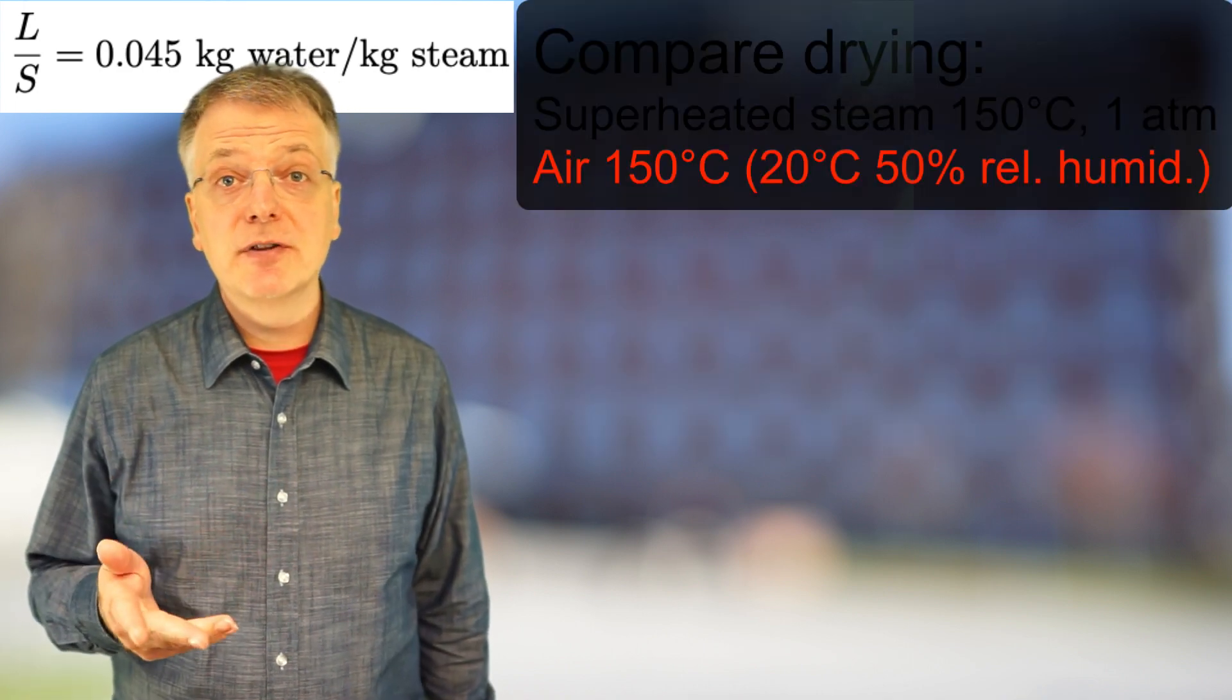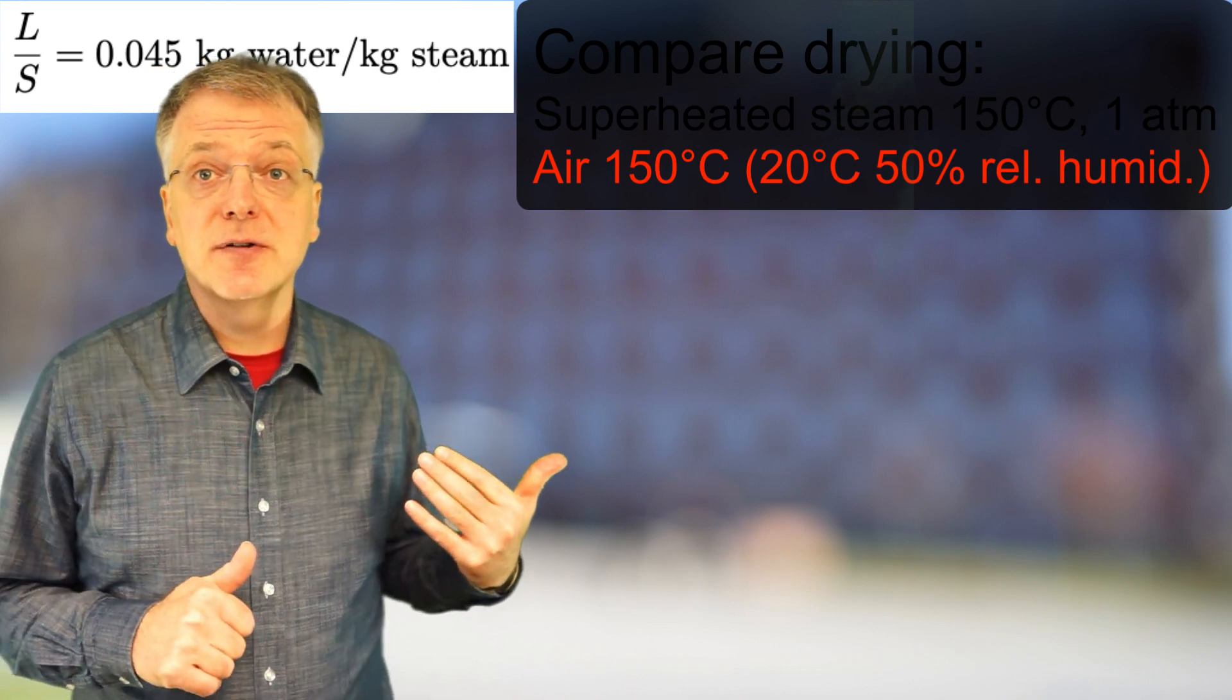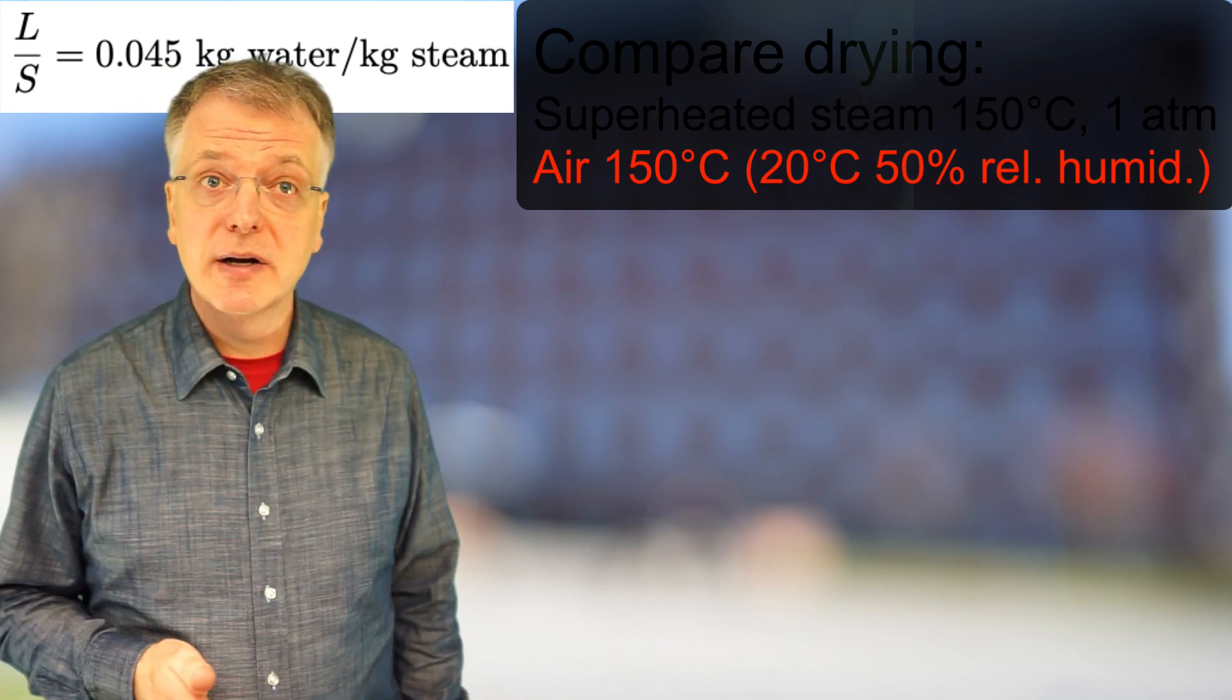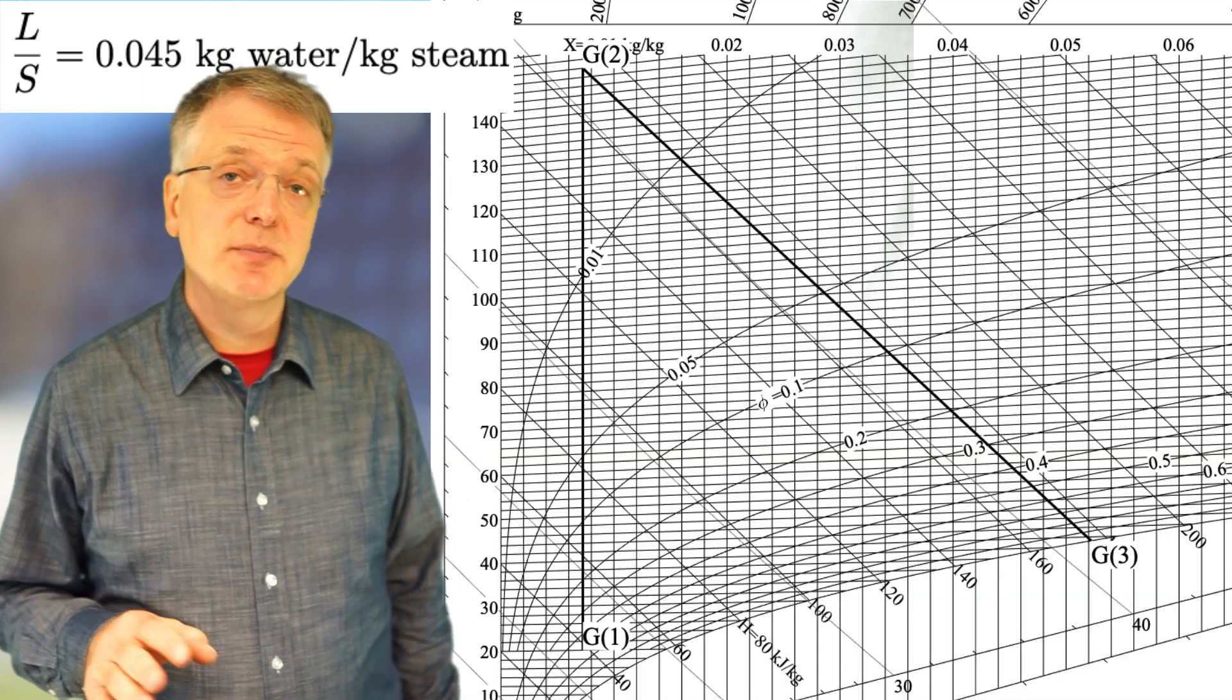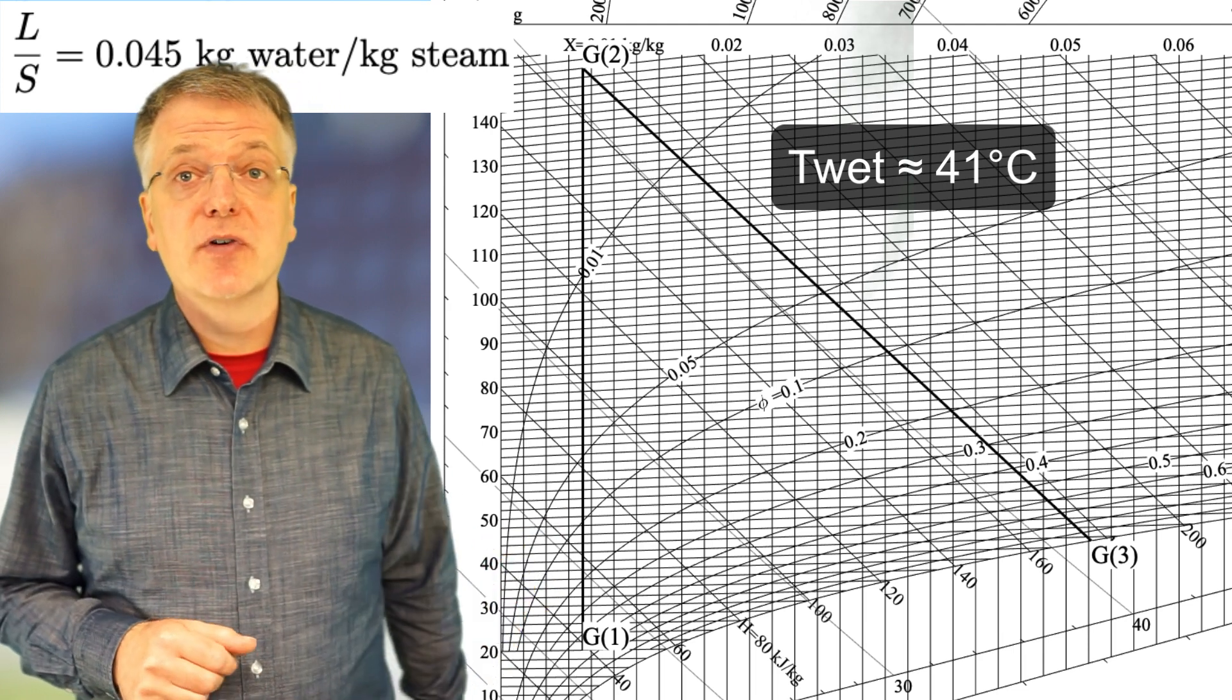In drying with 150 degrees air, if we start with fresh air with a relative humidity of 50% and a temperature of 20 degrees, we see in an appropriate Mollier diagram that T wet will be approximately 41 degrees, so the drying goods needs to be heated to 41 degrees.